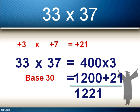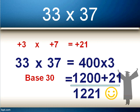So 33 times 37 is 1221. You may want to pause and watch this and the earlier parts a few more times to get your head around the steps. Notice that the multiplier in step one depends on the base used: base 10 multiplies by 1, base 20 by 2, and base 30 by 3.